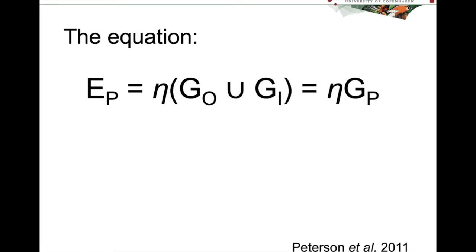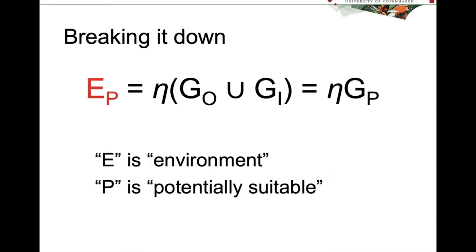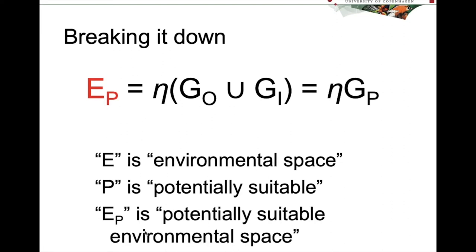And I'll go through all of the elements of this equation so that you understand what I'm talking about. The first part is EP. In this case, E stands for the environment, so environmental conditions, and P is potentially suitable. So all EP means is the potentially suitable environmental space.